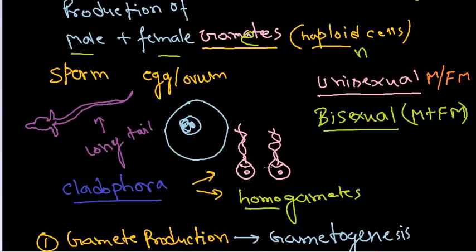For example, Cladophora, which is an algae, has similar structure or shape looking gametes called homogametes. But generally in higher order eukaryotic organisms like humans, birds, or reptiles, most of them have different types of gametes. The female gametes are usually larger and round or oval shaped, while male gametes are smaller with a long tail or flagella to move.